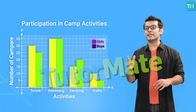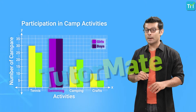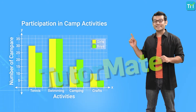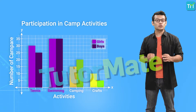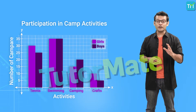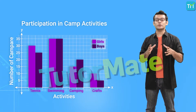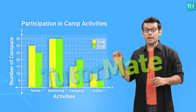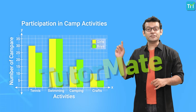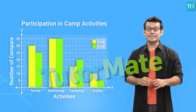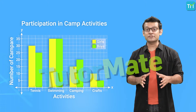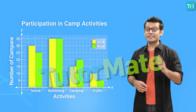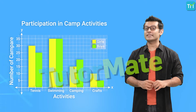We can see that boys and girls are equally interested in swimming, but fewer boys are interested in crafts than girls. This graph also encapsulates the total number of students on the camping trip, assuming each student can choose only one activity. So we can get the total number of students as 30 plus 25 plus 35 plus 35 plus 15 plus 20 plus 10 plus 5, which gives us a total of 75 students.